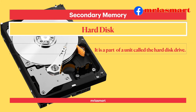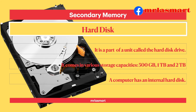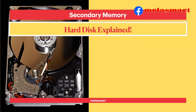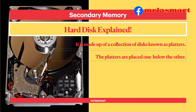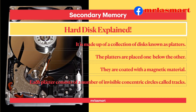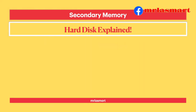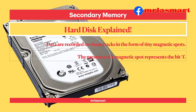The hard disk is part of a unit called the hard disk drive. It comes in various storage capacities: 500GB, 1TB and 2TB. A computer has an internal hard disk. It is made up of a collection of disks known as platters, placed one below the other and coated with a magnetic material. Each platter consists of a number of invisible concentric circles called tracks, which are further divided into sectors. Data are recorded on these tracks in the form of tiny magnetic spots: the presence of a magnetic spot represents bit 1, and the absence of a magnetic spot represents bit 0.